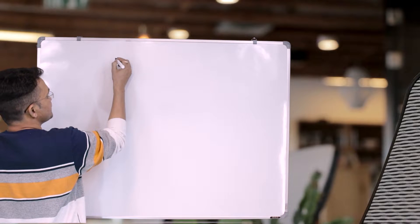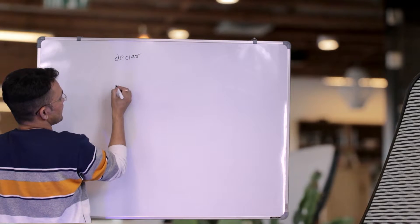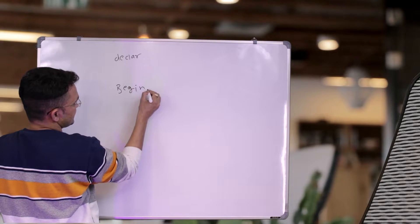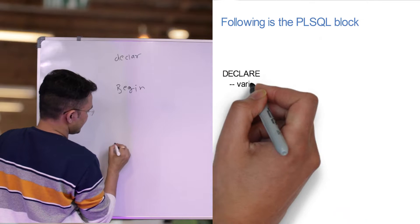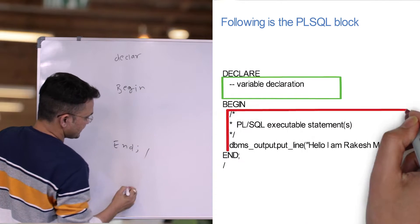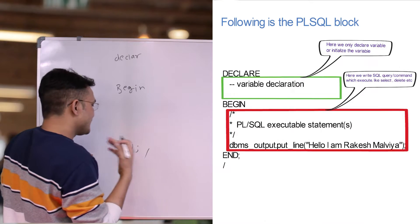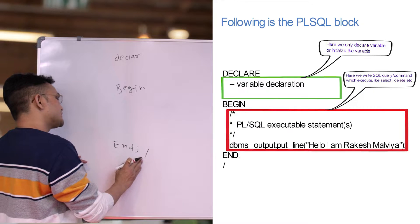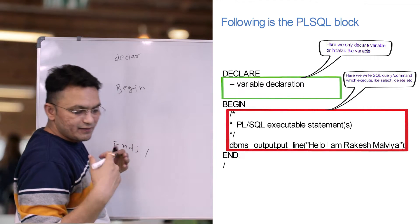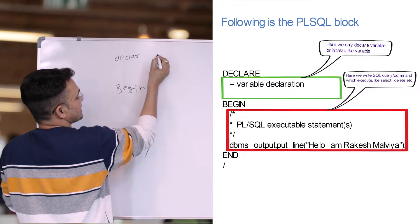What you need to do is write DECLARE, and then BEGIN, and then END followed by a semicolon and then a slash. The semicolon indicates this program has ended. Why we write the slash I will explain in the upcoming videos.